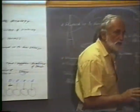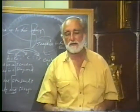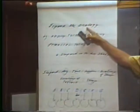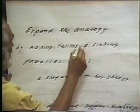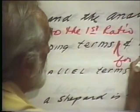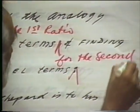When you have a four-term analogy, you must learn how to expand the number of terms to generate an allegory. Our goal is to expand the analogy by adding terms to the first ratio and finding parallel terms for the second ratio.